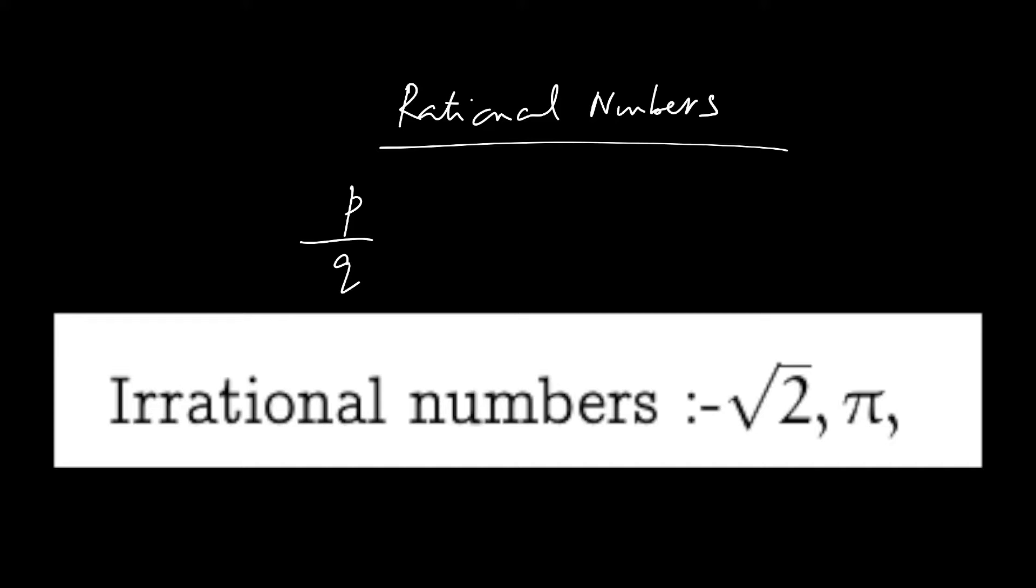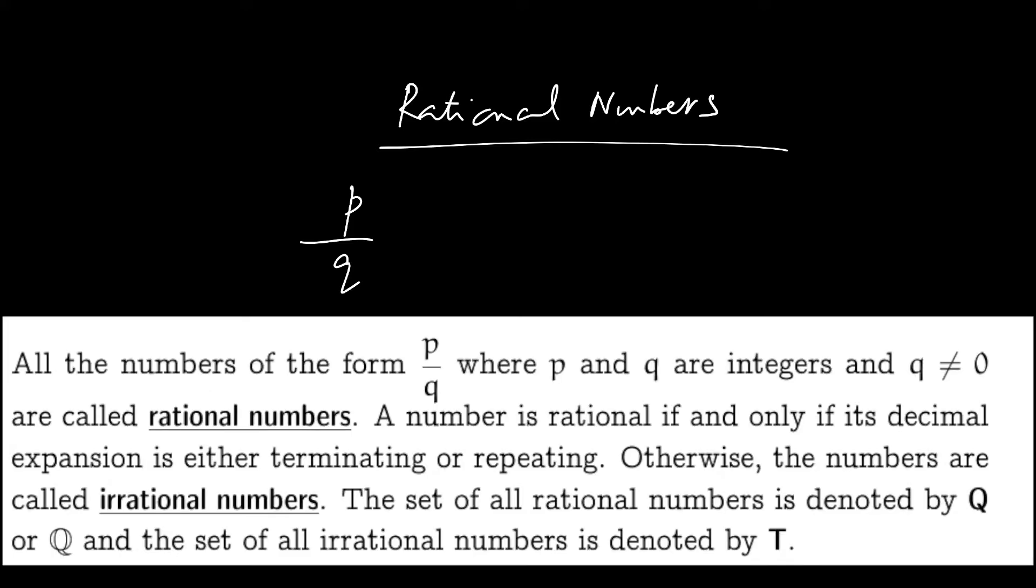This rational number has a decimal representation. Decimal point - they will either terminate or repeat. They will either stop or repeat.